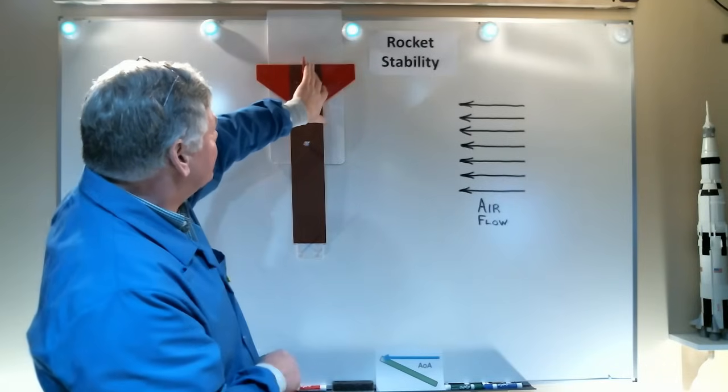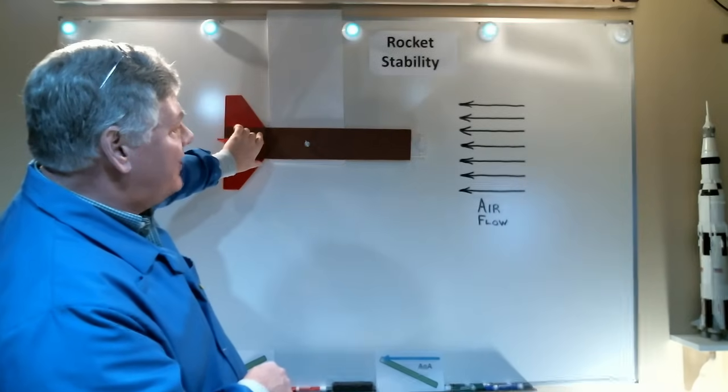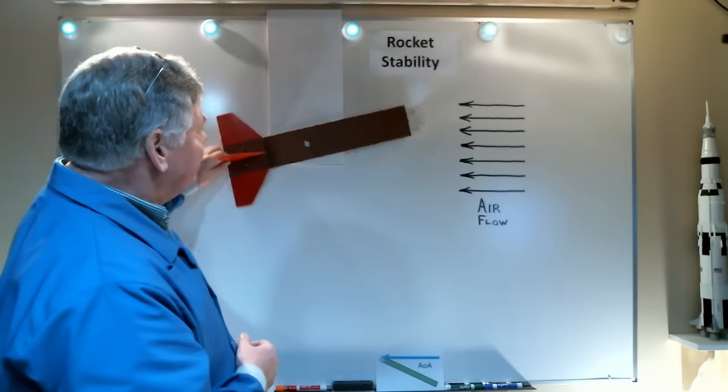So what happens is the airflow creates a force on the back of the rocket, pitching it around so the nose tends to point into the airflow. Now, as I mentioned earlier, the rocket's pitching up and down during flight.